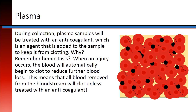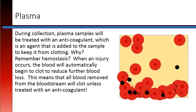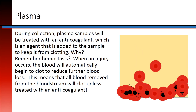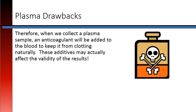During collection, plasma samples will be treated with an anticoagulant, which is an agent added to the sample to keep it from clotting. Remember hemostasis? When an injury occurs, the blood will automatically begin to clot to reduce further blood loss. This means that all blood removed from the bloodstream will clot unless treated with an anticoagulant. Therefore, when we collect a plasma sample, an anticoagulant will be added to the blood to keep it from clotting naturally. These additives may actually affect the validity of the results.